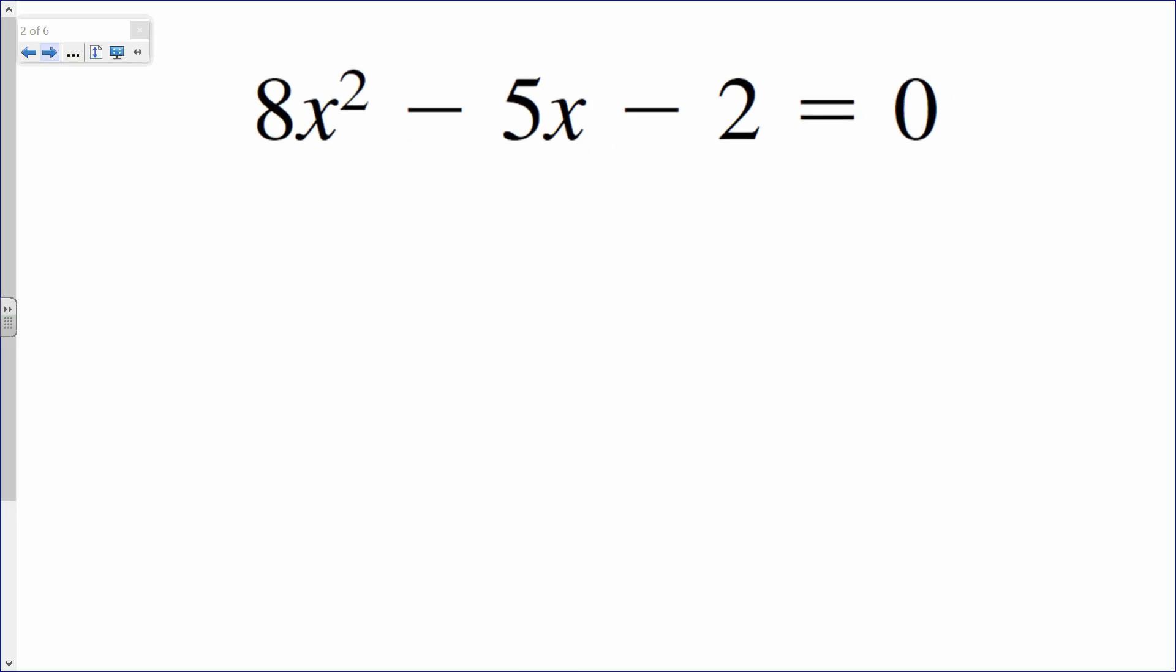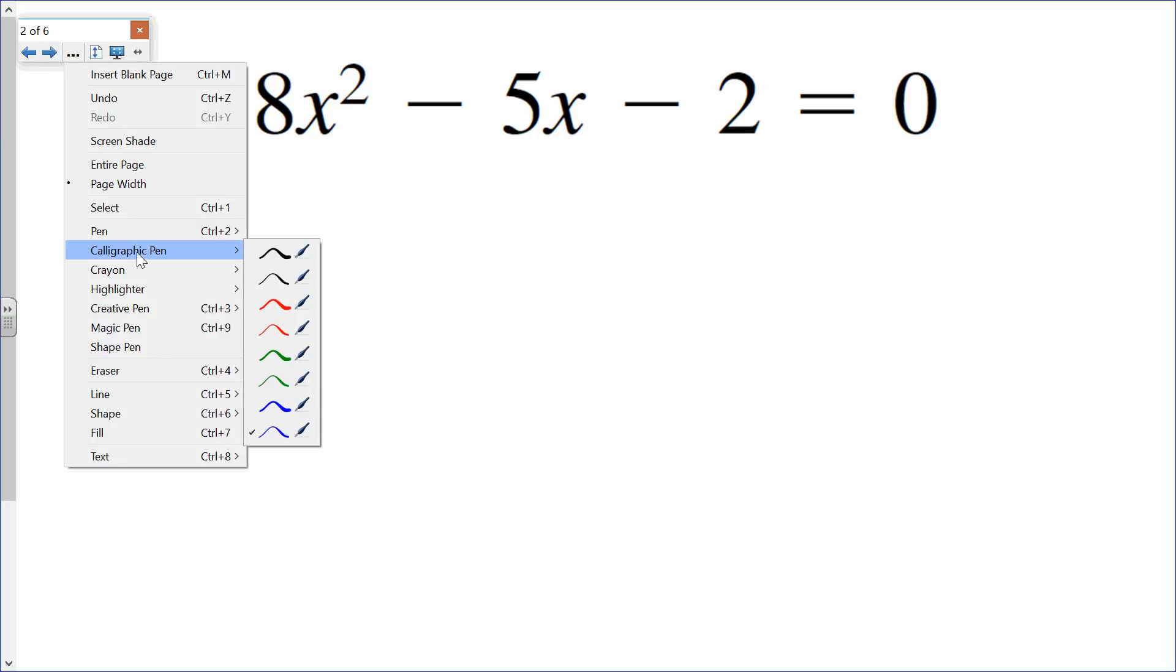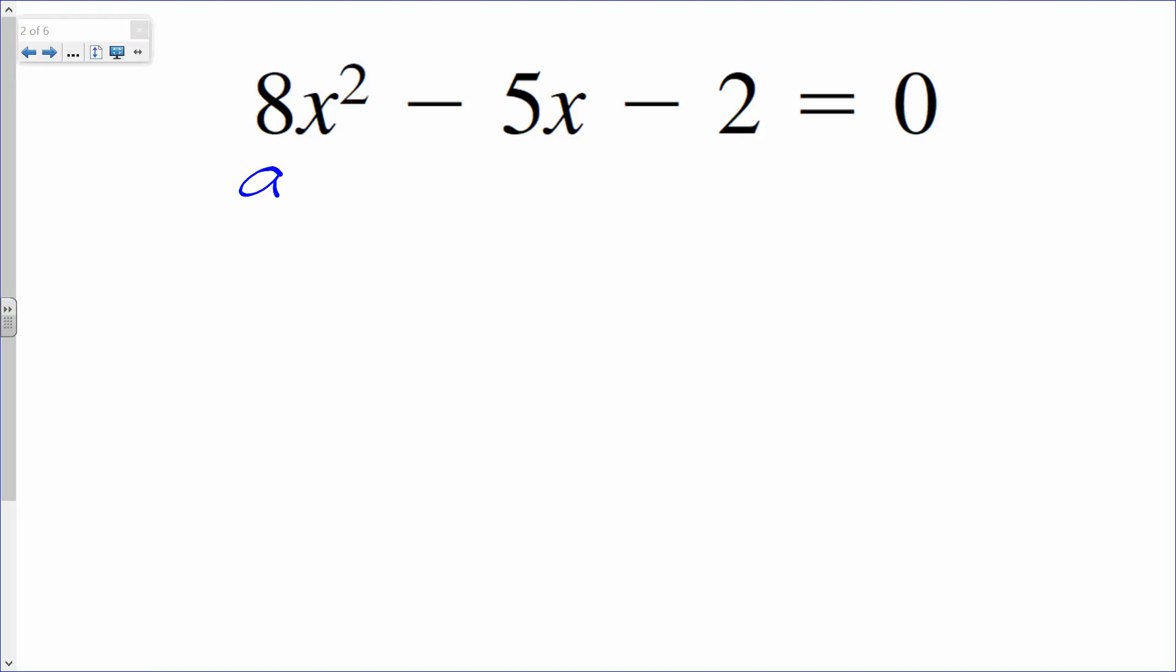The first thing we want to do is identify our a, b, and c. So let me compare this with ax squared plus bx plus c. This will enable us to substitute our values into the equation. So our a is positive 8, b is negative 5, and c is negative 2.